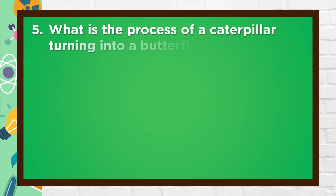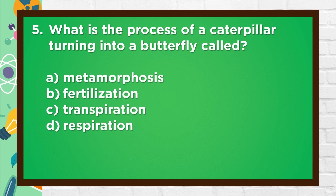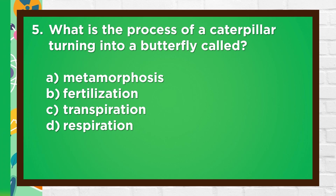Number 5. What is the process of a caterpillar turning into a butterfly called? A. Metamorphosis, B. Fertilization, C. Transpiration, D. Respiration. The answer is A. Metamorphosis.